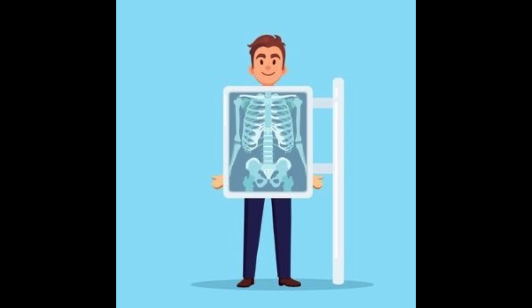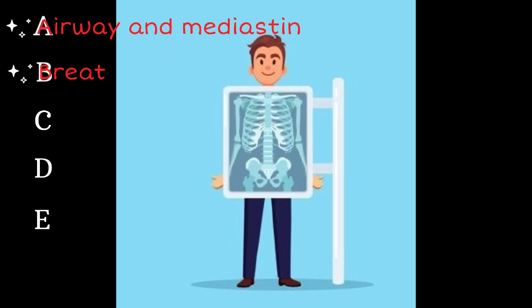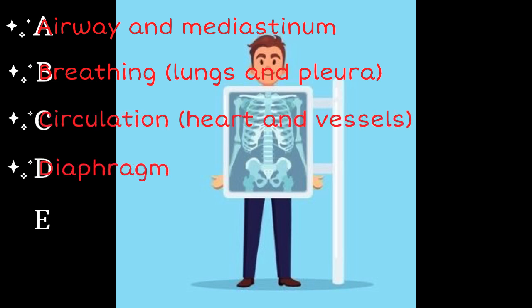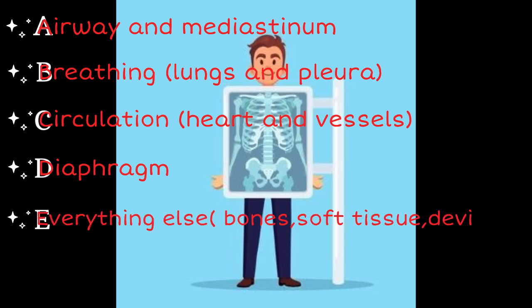Chest X-ray interpretation should be done using the ABCDE approach. A stands for airway and mediastinum. B stands for breathing — lungs and pleura should be assessed. C stands for circulation — heart and vessels should be visualized. D stands for diaphragm. E stands for everything else, i.e., bones, soft tissue, and devices.